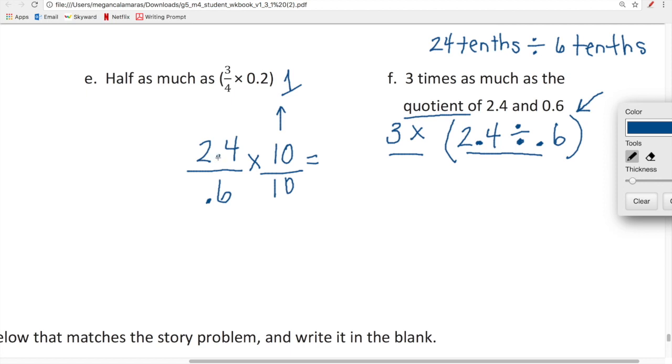When we multiply 2.4 by 10, the digits shift one place value to the left and we get 24. When we multiply six tenths by 10, the digit shifts one place value to the left and we get six. 24 divided by six is four. So that's one way we can do that.